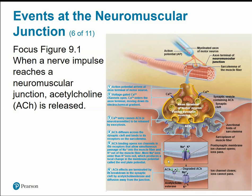This sodium influx changes the membrane potential — at rest, inside the cell is more negative than outside. Once ACh has delivered its message and changed the membrane voltage, it needs to be turned off. The enzyme acetylcholinesterase breaks down the ACh to close the sodium channels. Alternatively, ACh can simply diffuse away from the area.